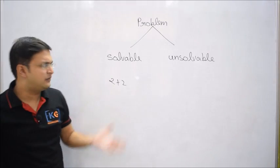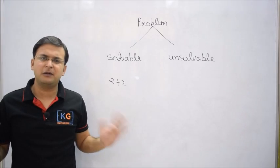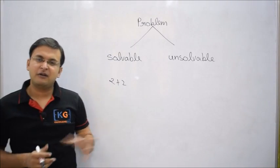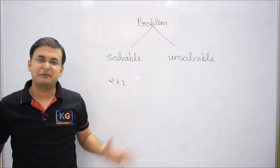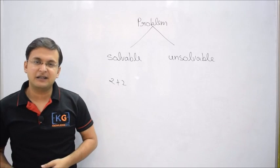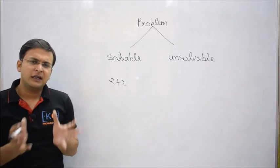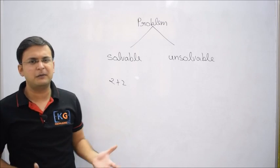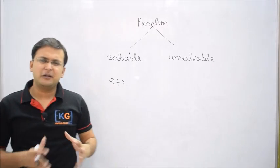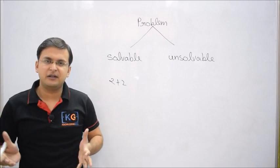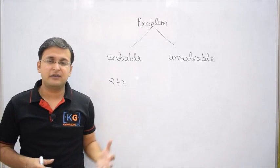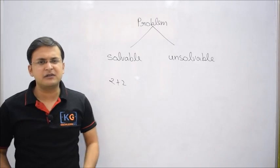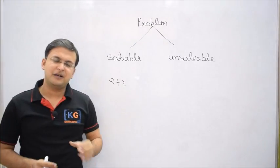Two plus two is four — the problem is solvable. But the problem becomes a little complex when I ask what is an unsolvable problem. Students say counting stars is unsolvable, or dividing by zero is unsolvable. So simply: a problem is solvable if you can solve it, and a problem is unsolvable if you cannot solve it. But let me tell you a very interesting story, and after that I'll ask you again what solvability and unsolvability mean according to computer science.